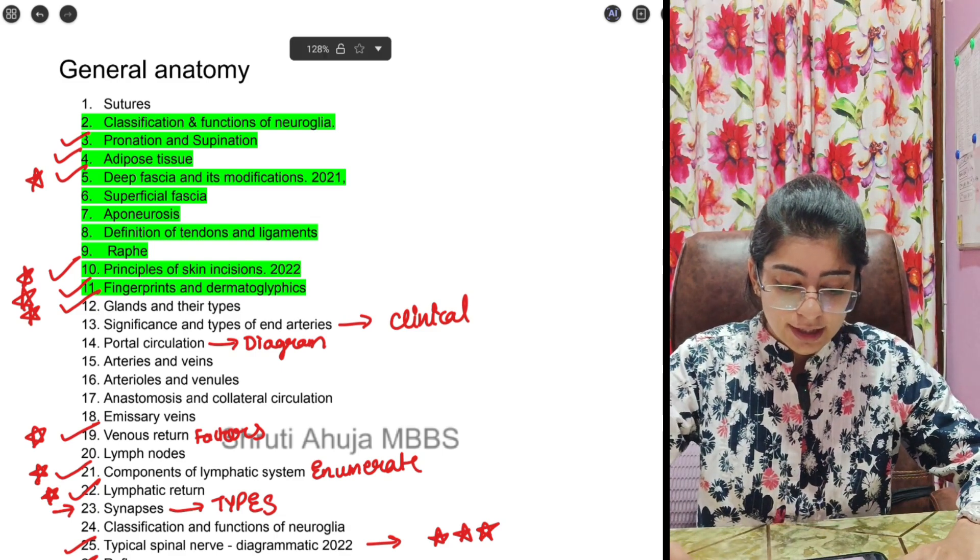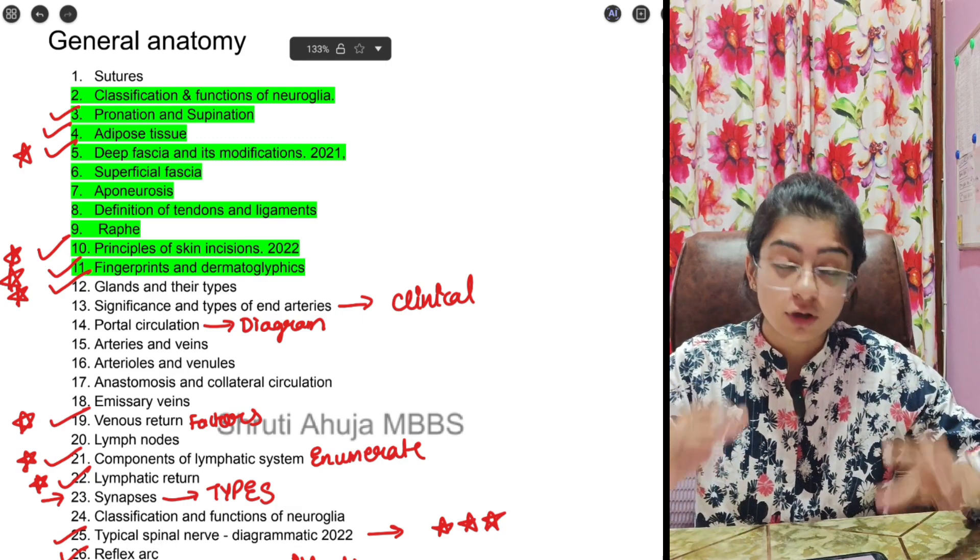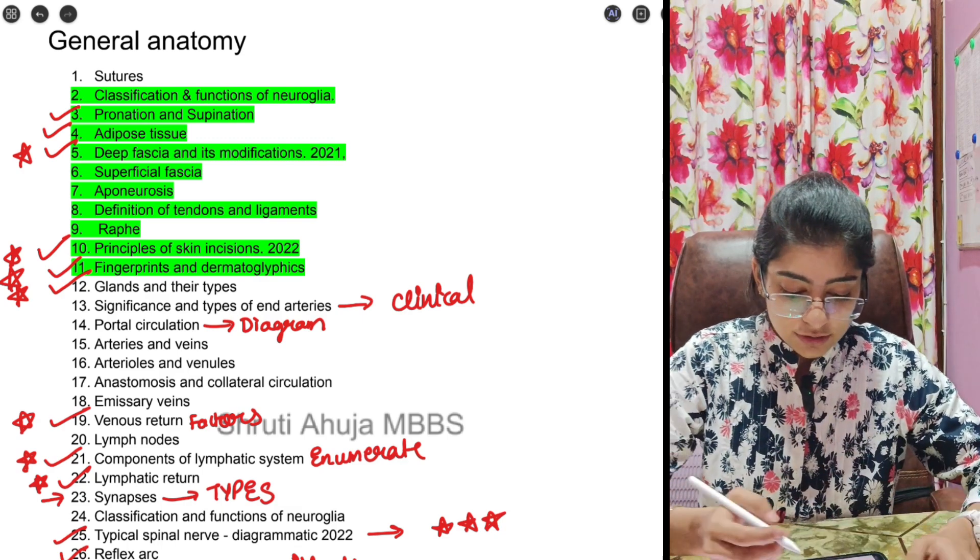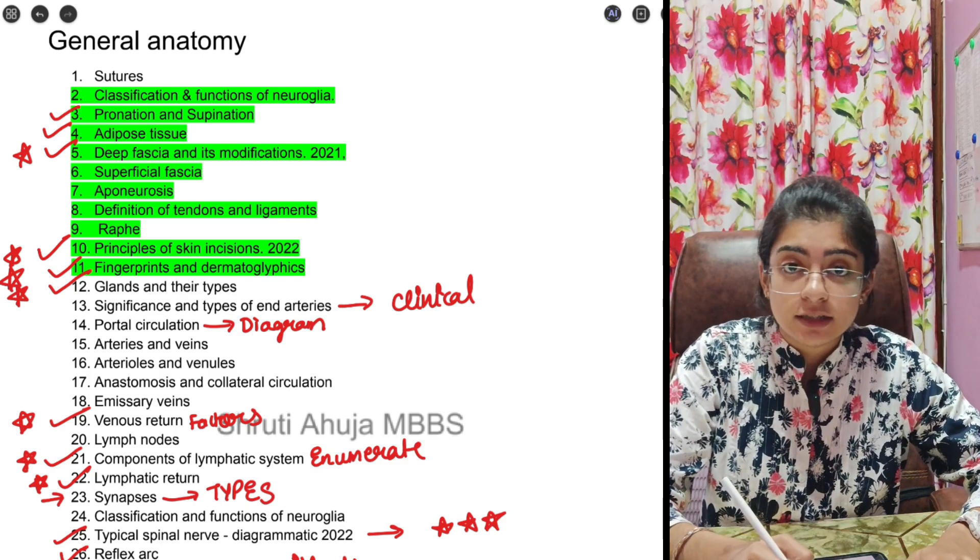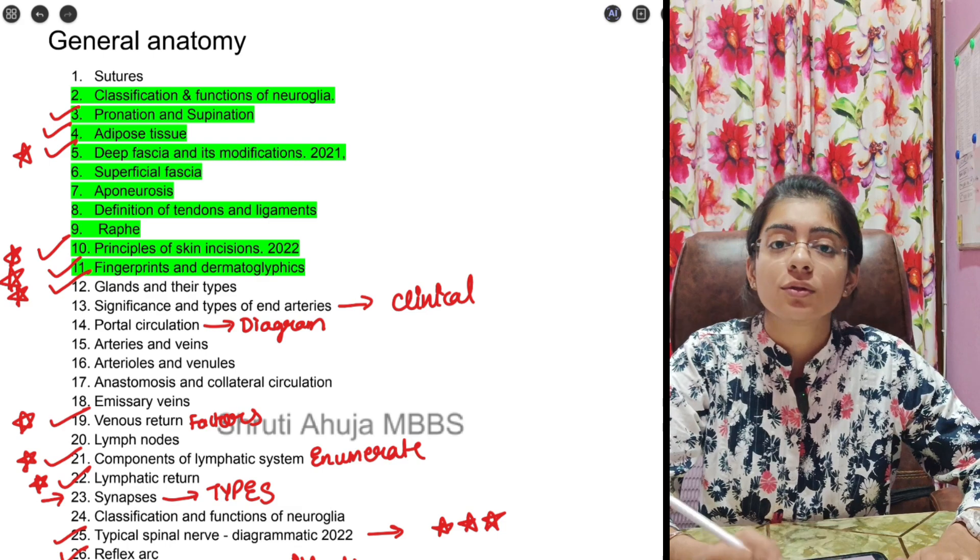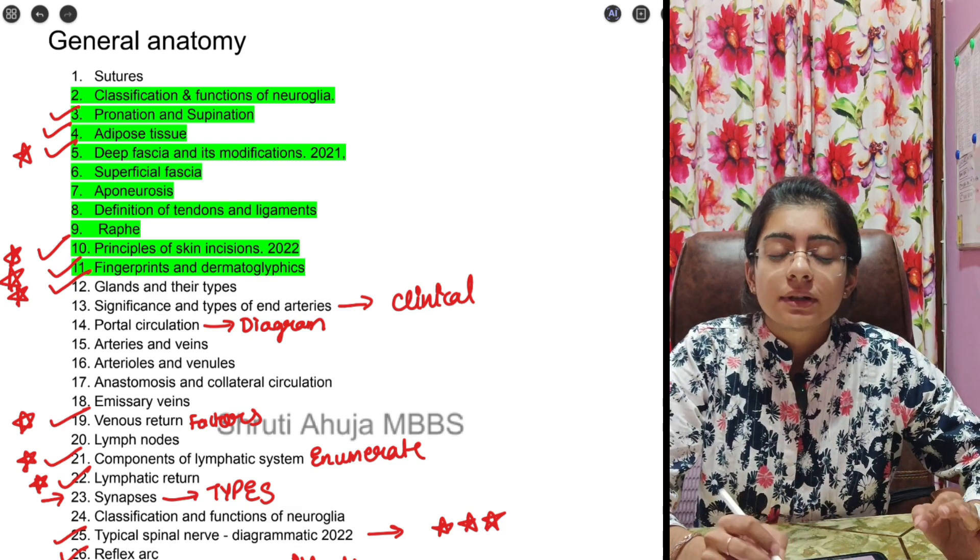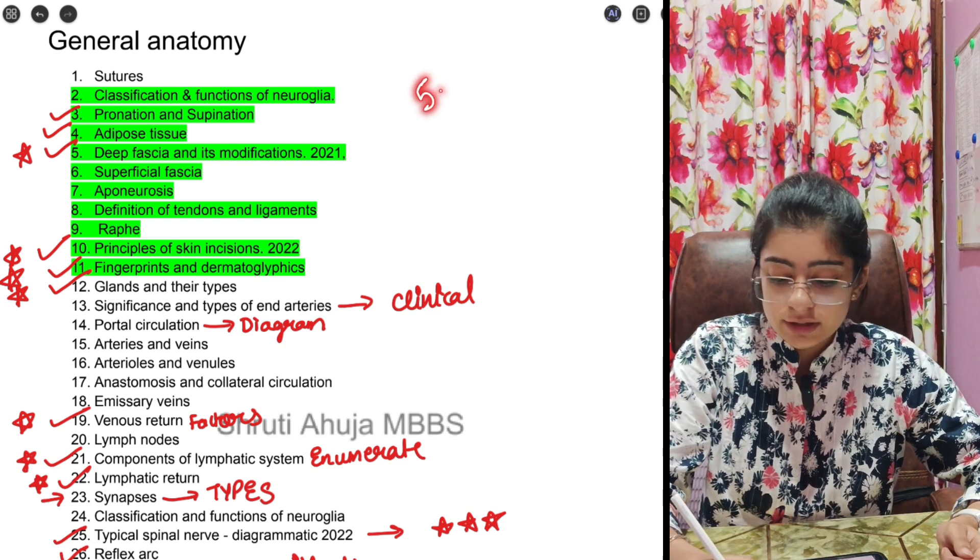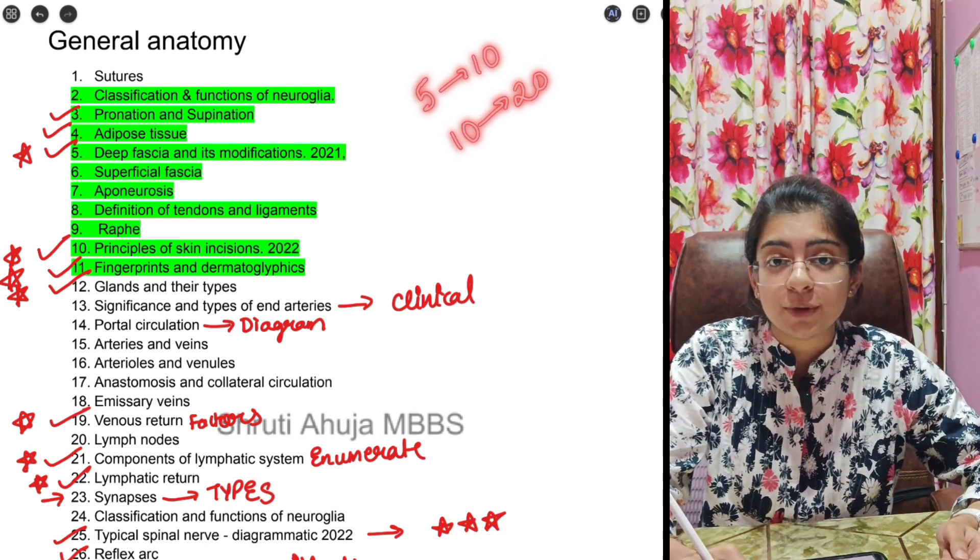First of all, I have marked all the questions and the topics on which there is a sure short question. First is pronation and supination, it is a difference question. If it is 5 marks then you need to add 10 points. It's a thumb rule: if it is a 5 mark question then 10 points, if it's a 10 mark question then 20 valid points.